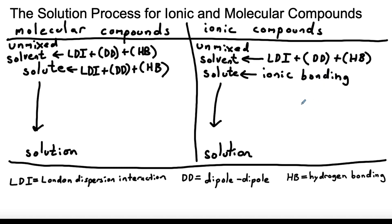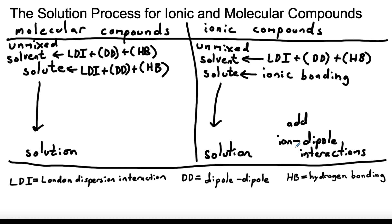Now let's look at what we have after we make the solution for both types of compounds. When we dissolve an ionic compound, once our substance dissolves, we add ion-dipole interactions — every ion is going to be surrounded by solvent molecules. If we have a polar solvent, we'll have ion-dipole interactions. If we have a non-polar solvent, we're going to add ion-induced dipole interactions instead. I'll explain the difference between those two on the next slide.